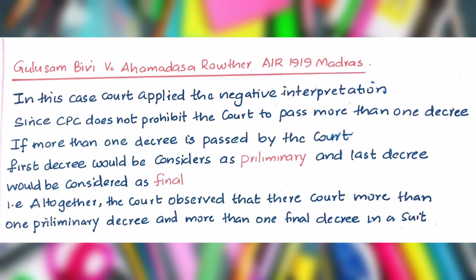Now let us discuss some important case laws regarding decree. The first case is Gulusam Bibi v. Ahamadasar Rauthar, 1919. In this case, the court applied the negative interpretation. Since the CPC does not prohibit the court from passing more than one decree, if more than one decree is passed by the court, the first decree would be considered preliminary and the last decree would be considered final. The court observed that there can be more than one preliminary decree and more than one final decree in a suit.